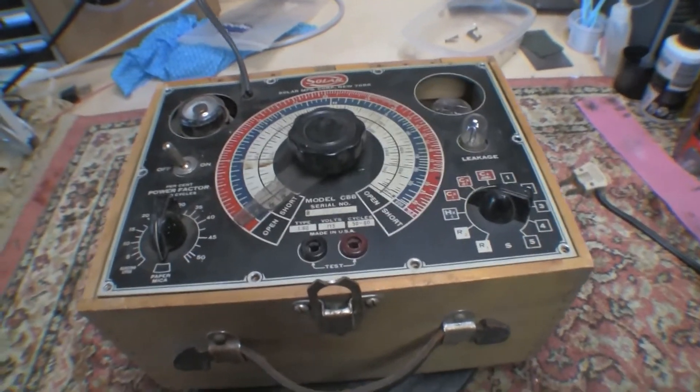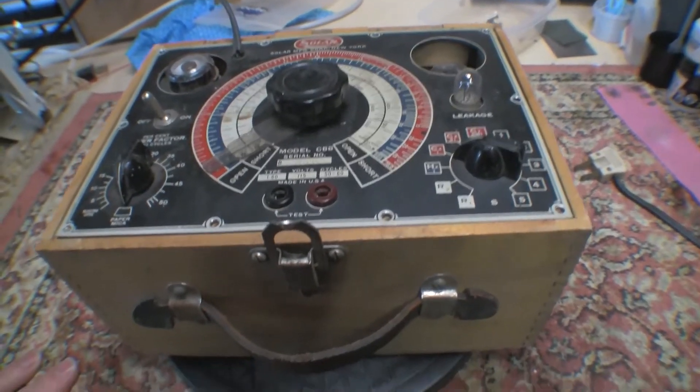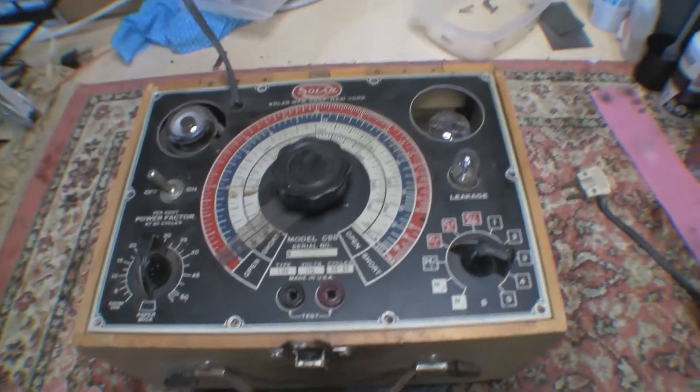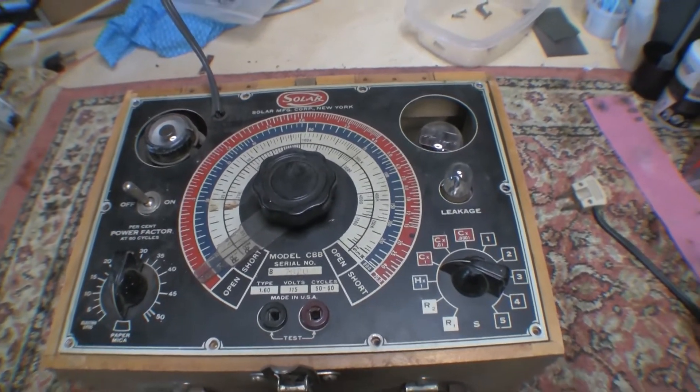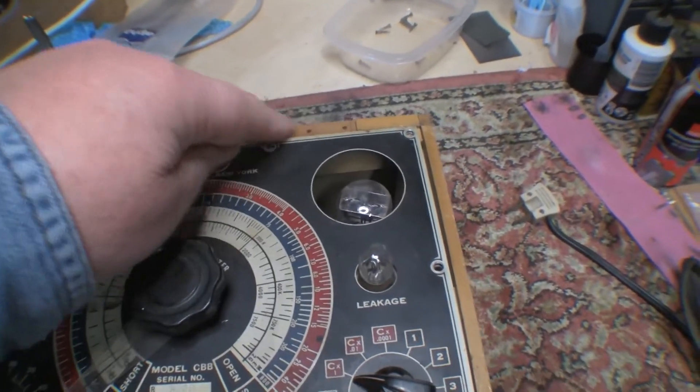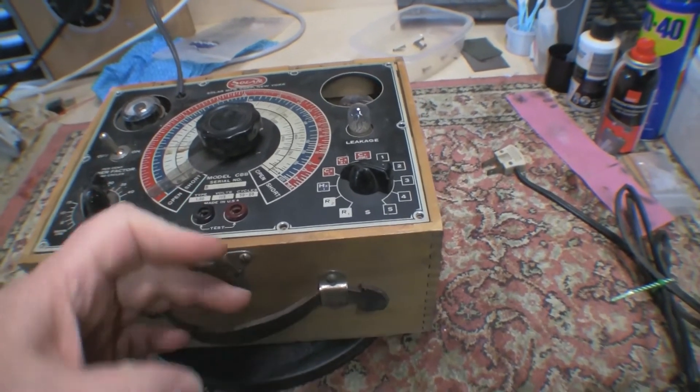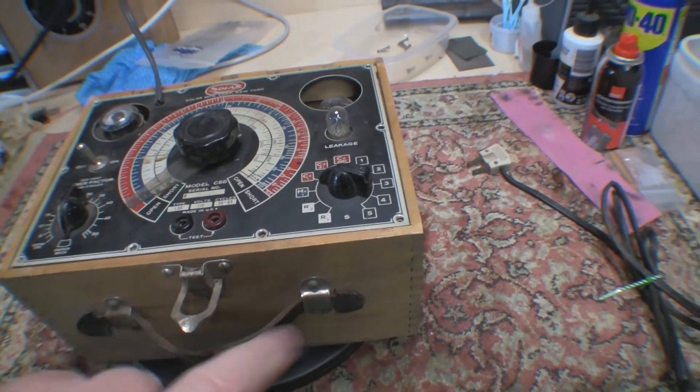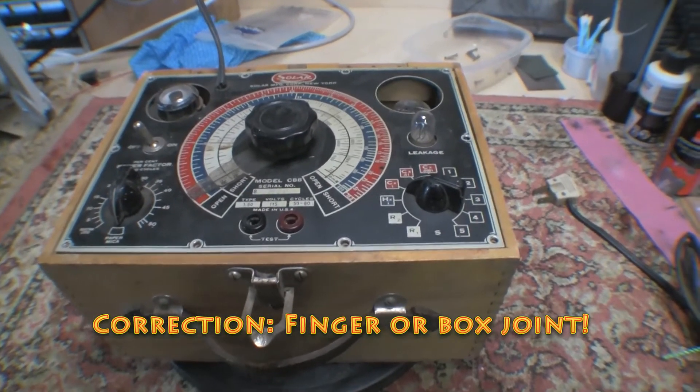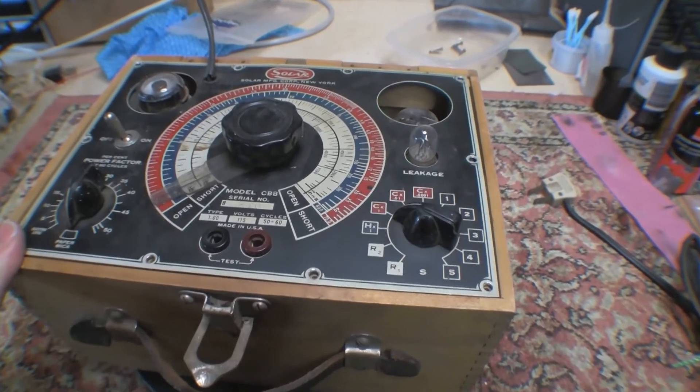It's not in the best condition but it's a Solar CBB 1.6 capacitance bridge. You can see right away that the hinges are gone so the hinge lid is missing and I'll have to make one up. It's got this nice tongue and groove. So yes, that's definitely something that I'll have to do.